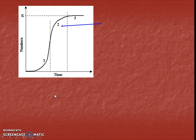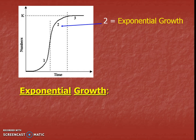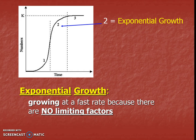The second stage is our more important stage, and we might remember this word from math class — it's called exponential growth. This is a very fast-paced, rapid growth, and it is one of our vocab words today. It means growing at a fast rate because there are no limiting factors. There's plenty of food, plenty of oxygen, and not enough predators to slow our growth — we're zooming up in our amount of organisms.